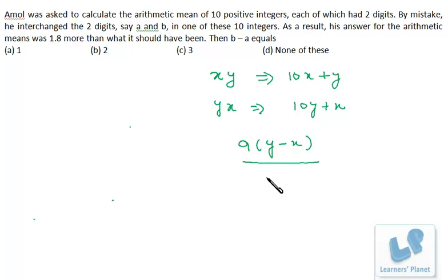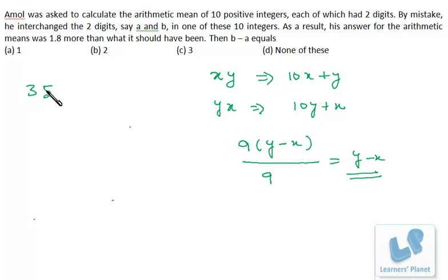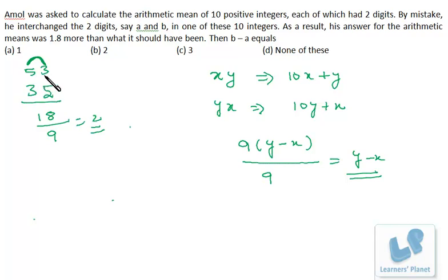Dividing the difference by 9 gives the difference between the digits. For example: 53 − 35 = 18, and 18/9 = 2, which is the difference between the digits. Similarly 81 − 18 = 63, and 63/9 = 7. In this problem, since the mean is off by 1.8 across 10 numbers, the total difference = 1.8 × 10 = 18. AB was written as BA by mistake, so the digit difference B − A = 18/9 = 2.